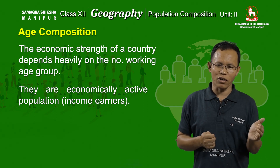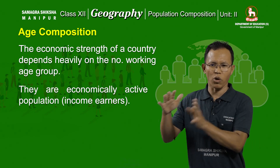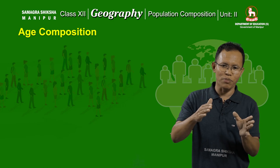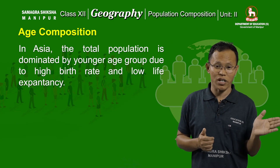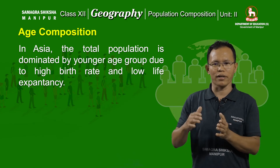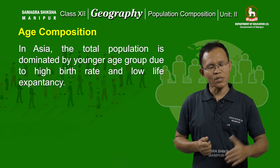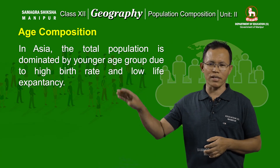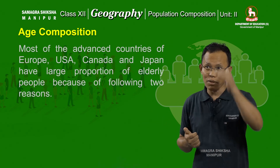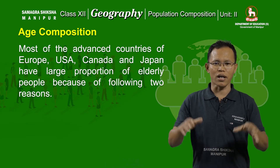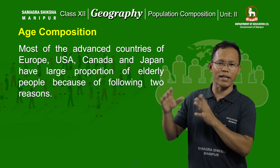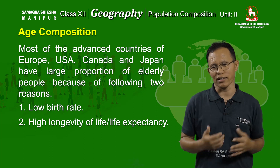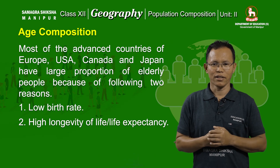On the contrary, in socially or economically less developed countries, there is a preponderance of the young age group because of high birth rates and high mortality rates, as seen in countries in Asia. For example, the total population of Asia as per census report 2011 is predominated by younger age groups due to high birth rates and low life expectancy. In contrast, in developed countries — especially Western European countries — there is predominance of the working age group due to low birth rates and lower mortality rates.